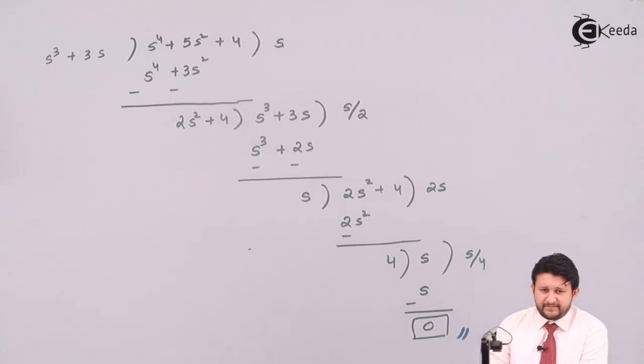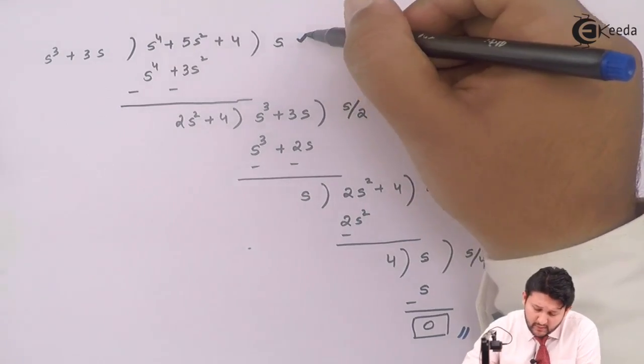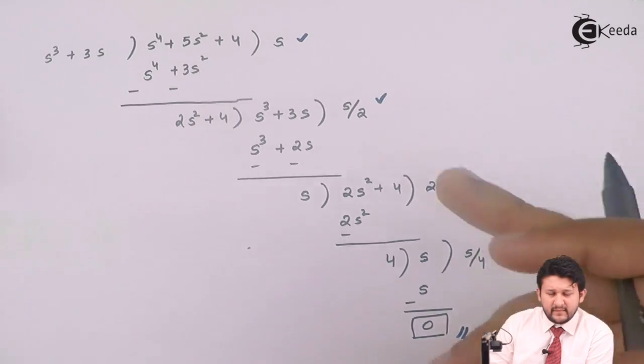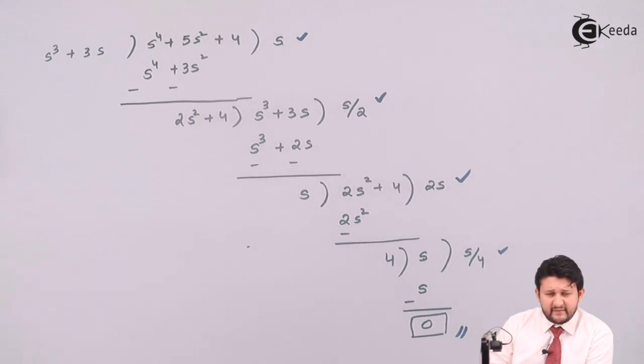Now, for this case, how to check whether it is Hurwitz or not? All the coefficients should be positive. If any coefficient is negative, it should not be Hurwitz.